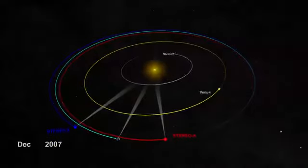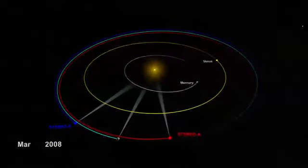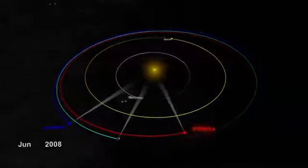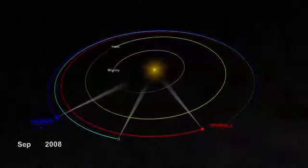Over the last four years, the two spacecraft have slowly made their way along Earth's orbit, with STEREO A advancing ahead and STEREO B falling behind.